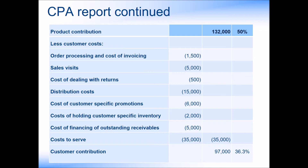Once we have the product contribution, we can deduct the costs to serve to derive the contribution per customer — in effect, the customer profitability. This can include costs such as sales visits, the cost of dealing with returns, distribution costs, specific promotions, the cost of holding specific inventory, and costs of financing the payment collection. The key for costs to serve is to make sure they relate directly to the customer. It is not good to apportion costs, as this detracts from the analysis. Remember: if you stop selling to the customer, will you save the cost? If yes, then we can allocate it to that customer. This provides the customer contribution or relative profitability.